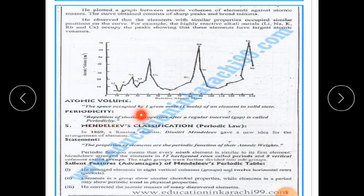Periodicity means after a regular interval gap in periodic classification. Now, Mendeleev's periodic classification — Mendeleev was basically a Russian scientist.